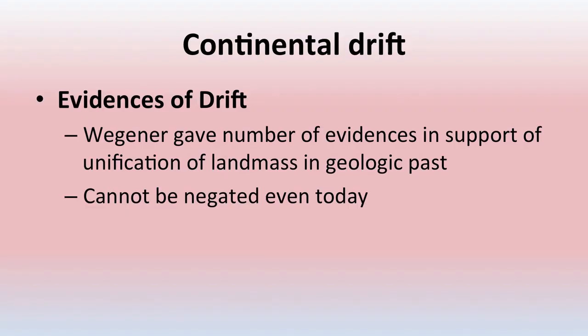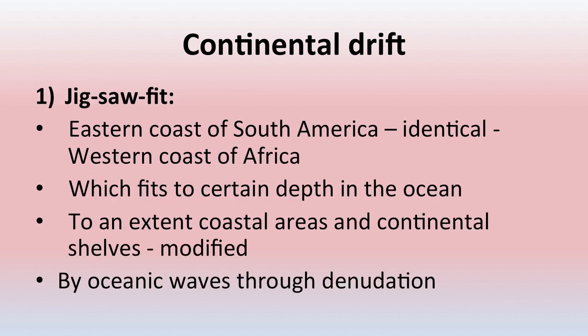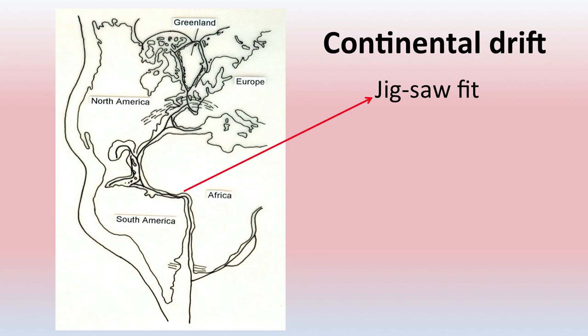What are the evidences of continental drift? Wegener gave a number of evidences in support of the unification of landmasses in the geological past. The first is the jigsaw fit — the eastern coast of South America can be seen as identical to the western coast of Africa, which fits to a certain depth in the ocean. Though coastal areas and continental shelves are slightly modified by oceanic waves or denudation, they can still be jigsaw-fitted, as you can see in the figure.